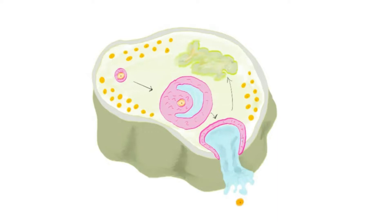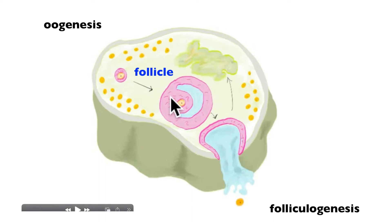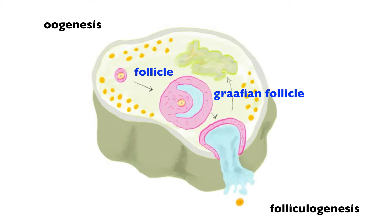Within the ovaries, one of the things happening is oogenesis. The developing eggs develop within a structure known as the follicle, seen here in pink. The developing follicle goes through stages — primary follicle, secondary follicle — in a process known as folliculogenesis. Folliculogenesis is retained within the cortex of the ovary. The final stage of development is what's known as the Graafian follicle.